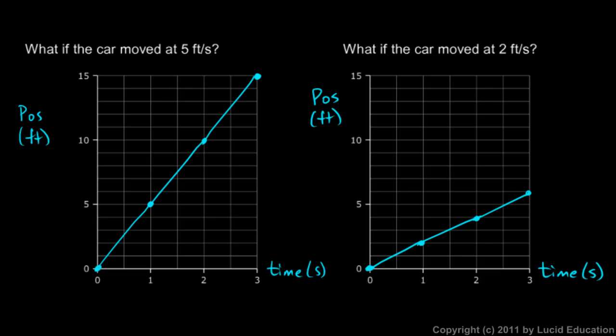So that's a graph showing where it is at any given time if it's moving forward at 2 feet per second. Now, these two graphs are good to look at side by side, because you can see very clearly that when the car is moving faster, the graph goes up more steeply. And when the car is moving slower, the graph is not as steep.